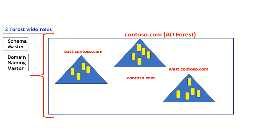There is no hard-and-fast rule about which domain controller holds the role. That's why single master operations are called flexible single master operation roles — it depends on us as administrators which domain controller is assigned the role. There will be only one domain naming master per Active Directory forest as well, and there won't be more than one schema master or domain naming master in a forest.